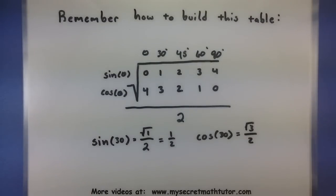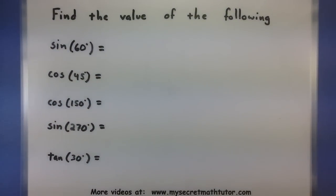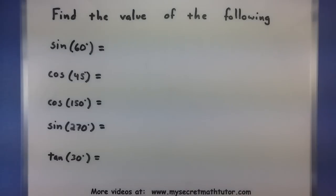Let's do some practice problems and see this table in action. So here I want to figure out the values of the following trigonometric functions. I got sine, cosine, I even threw in a tangent near the end. All right, so first thing we need to do is build our table so I have a good reference as to what all of these things are.